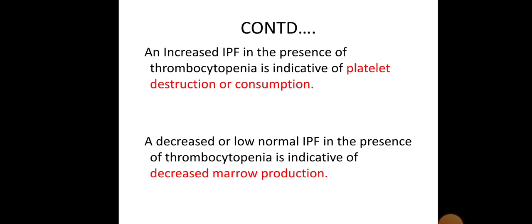Thus the IPF — immature platelet fraction — is the index of thrombopoiesis and can help determine the mechanism of thrombocytopenia. Remember: an increased immature platelet fraction in the case of thrombocytopenia is an indication of increased platelet destruction or increased platelet consumption, whereas a decreased or normal immature platelet fraction in the presence of thrombocytopenia is an indicator of decreased bone marrow production.